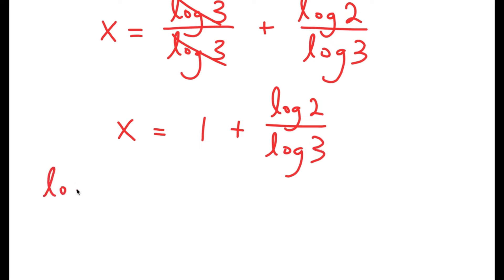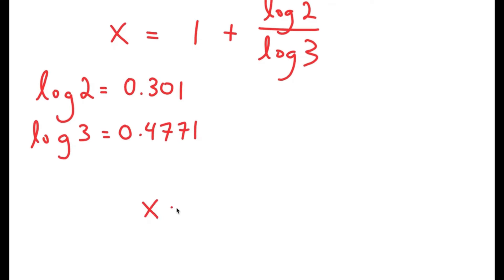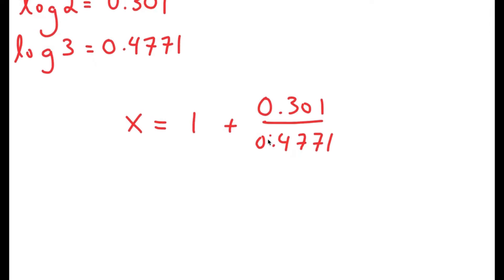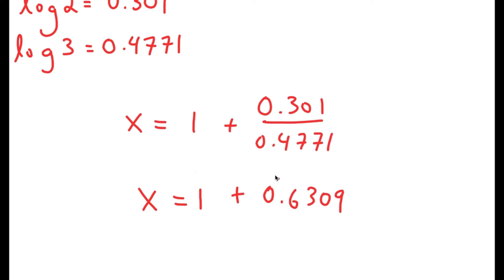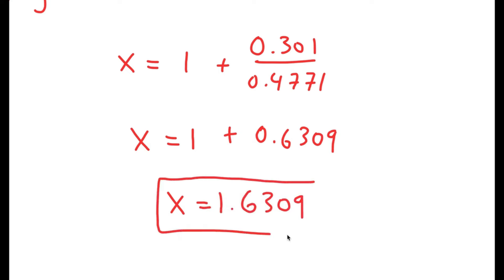Now, log 2 is equal to 0.301 and log 3 is equal to 0.4771. So x equals 1 plus 0.301 over 0.4771. And 0.301 over 0.4771 is 0.6309. So x equals 1 plus 0.6309, which is equal to 1.6309. This is my solution.